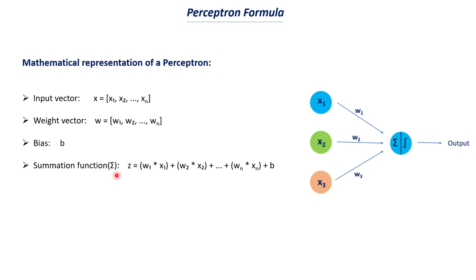The summation function is called z. So z equals W1 times x1 plus W2 times x2, continuing similarly up to Wn times xn, and finally we add the bias b. This is what we call the weighted sum or summation z. Then we apply an activation function to this z value — some function is applied to the summation. So z is essentially the sum of the products of each weight and its corresponding input feature, plus the bias.